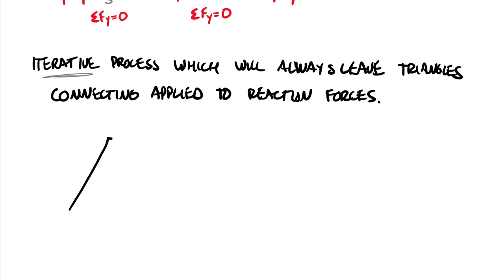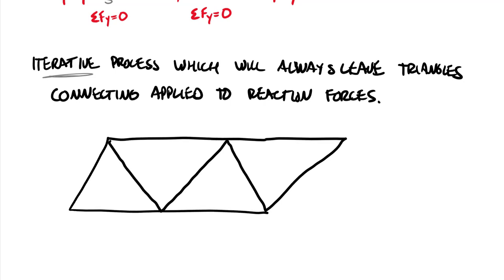So if we look here at another trust system it's again all the straight members are going to be rigid bodies everywhere they come together will be a pin. Okay so pin, pin, pin, pin, pin all the way around. So let's label these. We'll go counterclockwise. A, B, C, D, E, F, G, H, I, J.